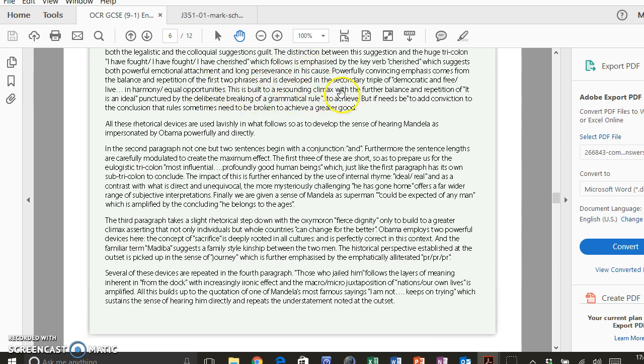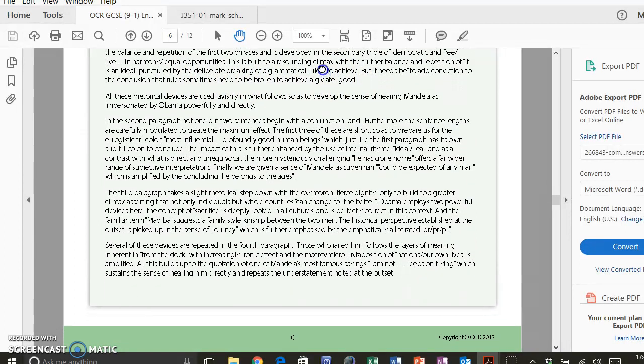'This is built to a resounding climax.' Here the student's talking about structure. Remember when we said about topic change, what the text begins with, what it builds up to, how it ends. This is what they're doing here. Climax is the high point of a speech or an article or story, 'with a further balance and repetition of it is an ideal, punctured by the deliberate breaking of a grammatical rule to achieve but if needs be, to add conviction to the conclusion that rules sometimes need to be broken to achieve a greater good.' Okay, what the student's doing here is quite clever. This is the quotation that Obama's made in his speech, and if you look, it is actually a bit unusual. It's a bit like Yoda speech.